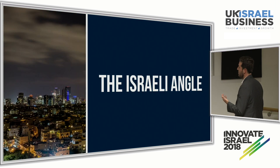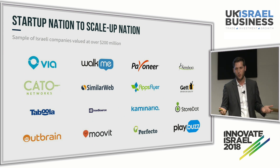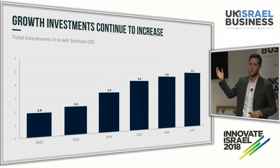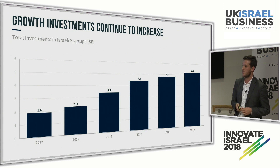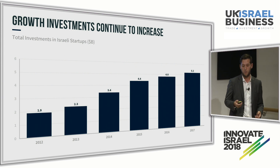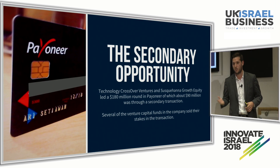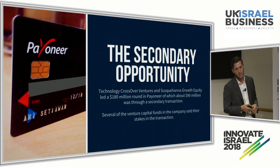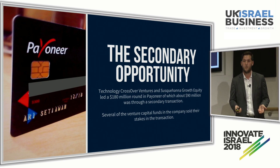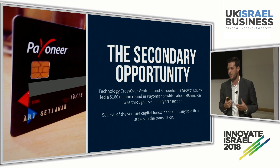The Israeli angle is very important because we are looking at Israel. As has been stated here today many times, Israel is growing into a scale-up nation, and more than ever before we're seeing tremendous amounts of capital going towards growth-stage investments. If you look at the growth of capital invested in Israel, the vast majority in 2017 actually went to growth stage. We are seeing Israeli funds adjust to this and actually utilize secondary transactions. The best example we have today is Viola Ventures, previously Carmel Ventures, which essentially sold a large part of its position in Payoneer as part of the latest round in the company. We believe these are some of the biggest trends that will impact venture capital in the upcoming years.